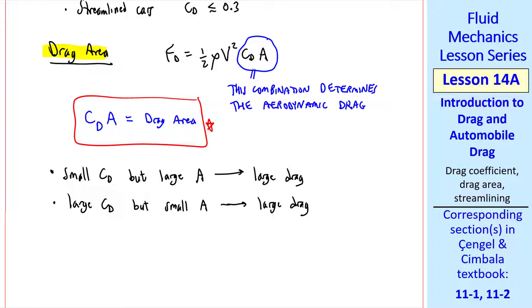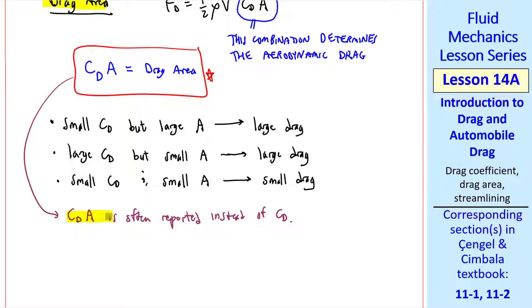Similarly, if you have a large CD but a small area, you can still have a large drag. You achieve a small drag by having both a small CD and a small area. And we all know that small cars typically have better gas mileage than large cars. For this reason, CDA, the drag area, is often reported instead of CD for automobiles.